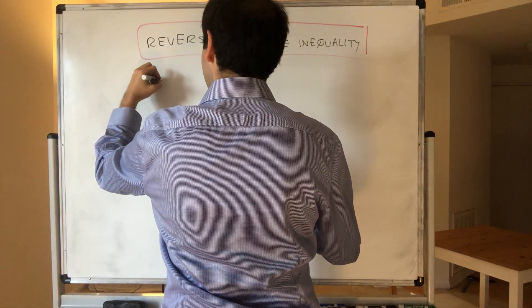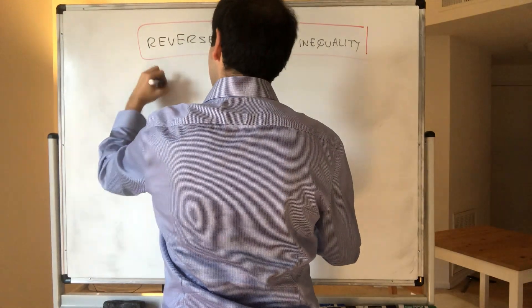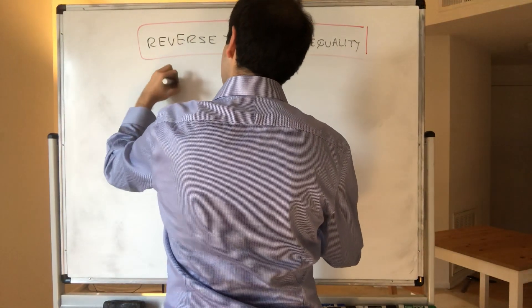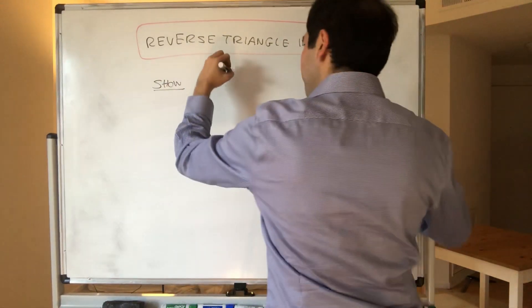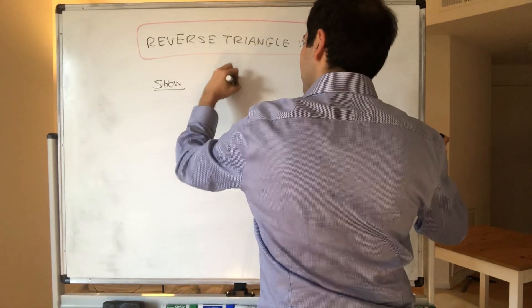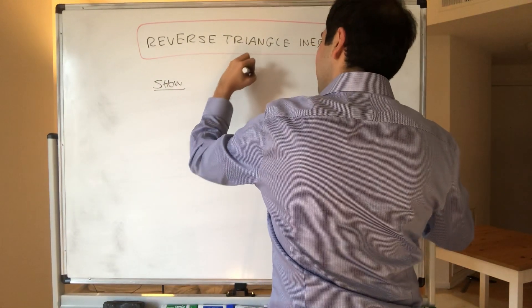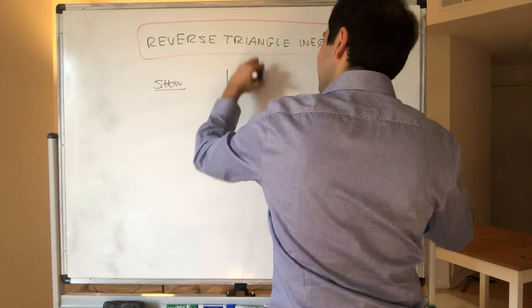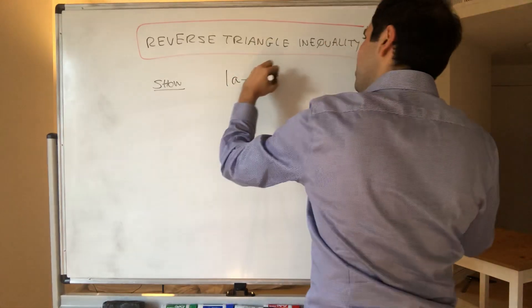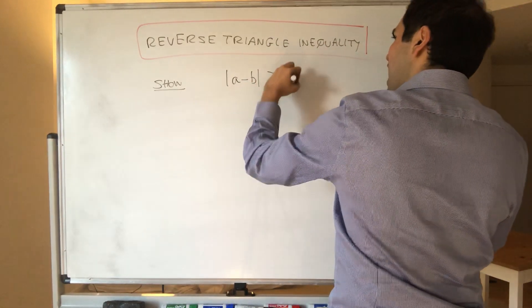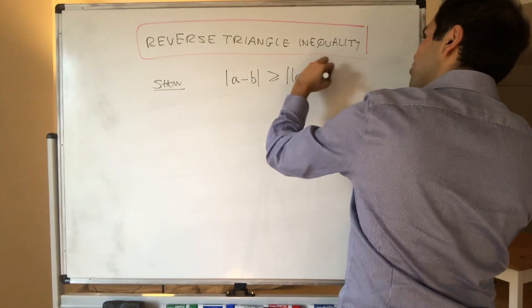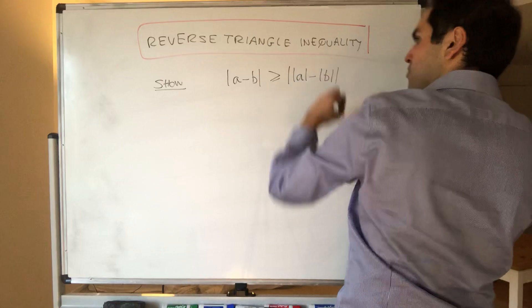So what I want to show is that the absolute value of a minus b is always greater than or equal to the absolute value of the difference between the absolute values.